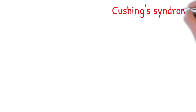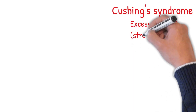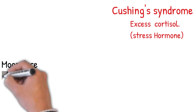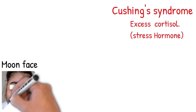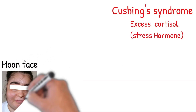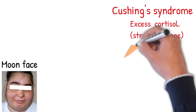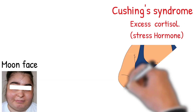Cushing's syndrome is when clinical abnormalities occur due to excess production of cortisol. Signs and symptoms include weight gain caused by hyperinsulinism from hyperglycemia, and insulin increases fat deposition.